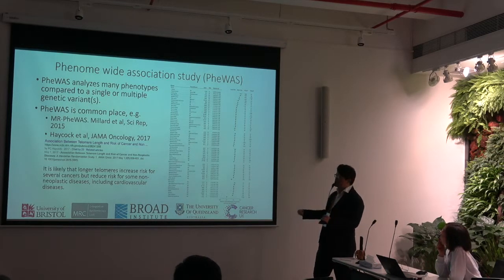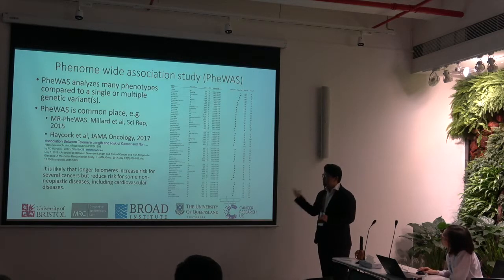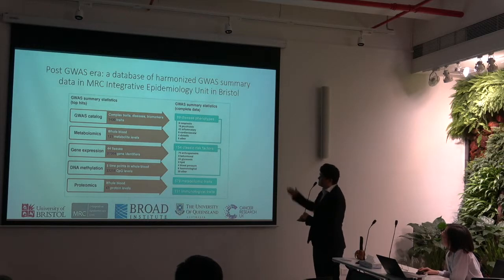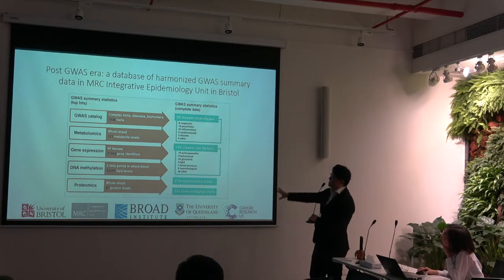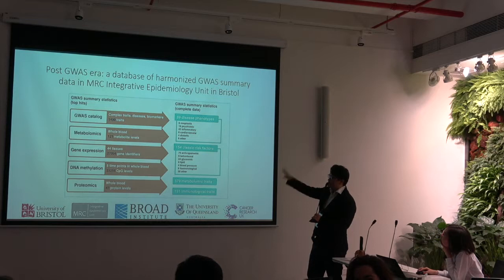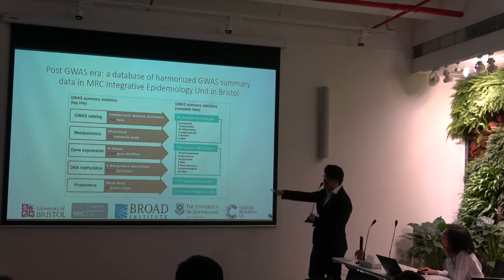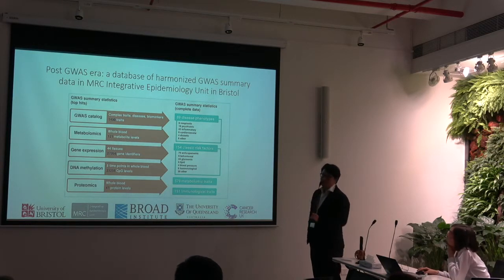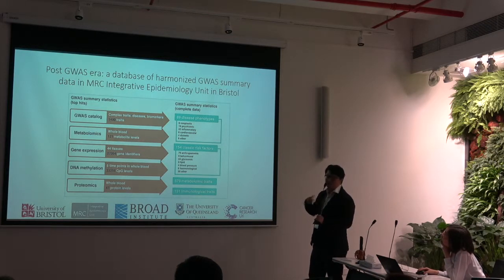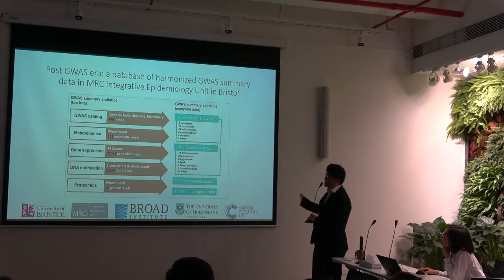If you look at a one-on-one relationship, you cannot find this. This flagship paper led to the development of a database of harmonized GWAS summary data in our unit. We have two sets of data: GWAS summary data for the top hits — which you can normally find in the GWAS catalog — as well as metabolomics, methylation, and proteomic data. We also collect full GWAS summary results across the whole genome; we have about 1,000 of them, which is so far the largest database in the world.